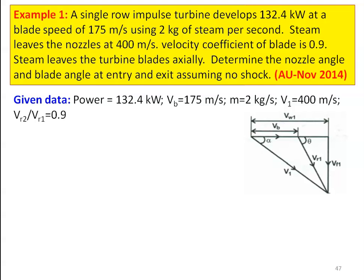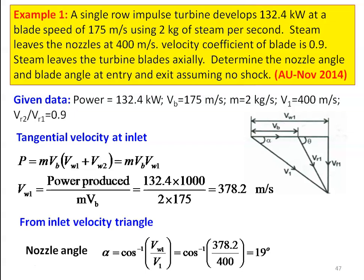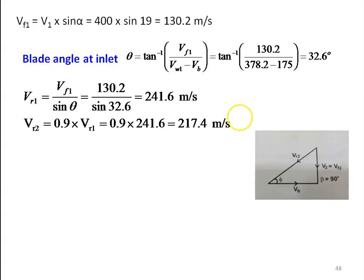The inlet velocity triangle is shown. Vw1 is the tangential velocity, V1 is the absolute velocity, alpha is the nozzle angle, Vb is the blade speed, Vf1 is the flow velocity, Vr1 is the relative velocity, and theta is the blade angle at the inlet. Power output equals M into Vb into (Vw1 + Vw2). For axial discharge, Vw2 = 0, meaning the steam leaves with angle beta = 90 degrees, so V2 = Vf2 and Vw2 = 0.